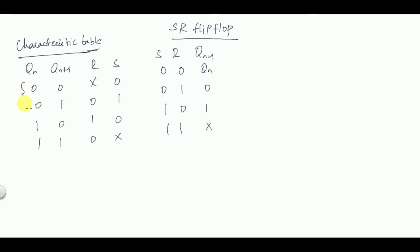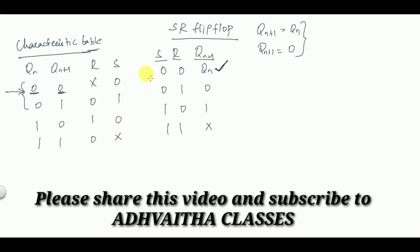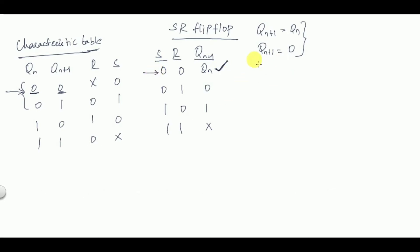I'll explain the first two cases — you can apply the same logic to the remaining ones. When QN+1 equals QN, both values are 0, so QN+1 equals QN. Also, QN+1 equals 0. I need to take two cases: the case where QN+1=QN (from the no-change row) and the case where QN+1=0 (from the reset row).